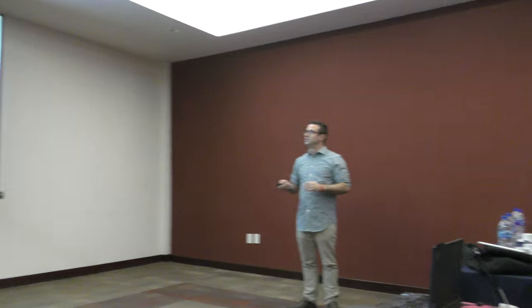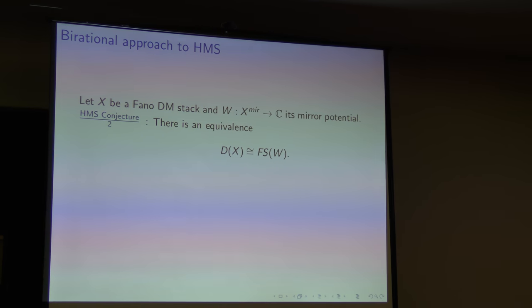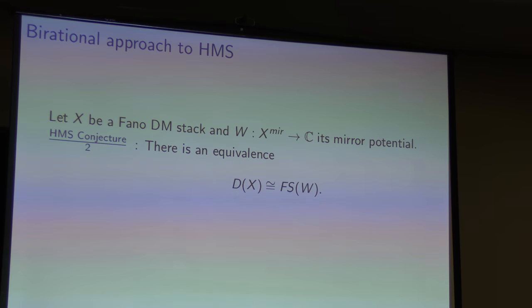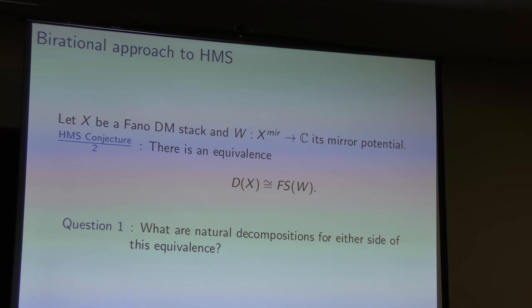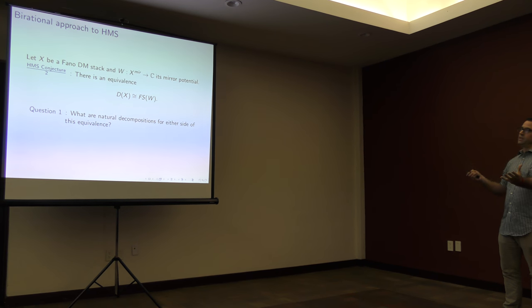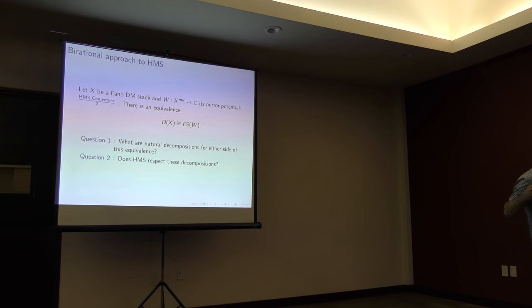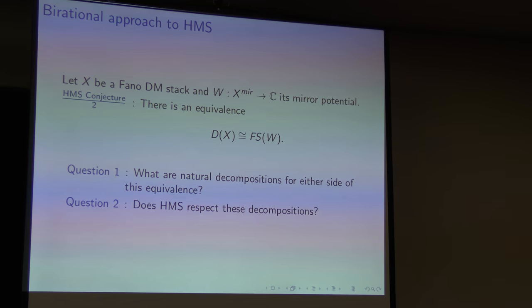Under these circumstances, with some conditions, we can define this Fukaya-Seidel category. Even though X is a stack, the mirror manifold is always a manifold in this case. Both sides of this equivalence — this conjectural equivalence — are very complicated on their face. So I'm going to ask some very naive questions about both of them. The first question is: are there natural decompositions for either side of this equivalence? And the second question is: if I had some natural decomposition of the category on the left and some natural decomposition of the category on the right, is there a way that homological mirror symmetry will send one to the other, respecting these decompositions in some nice way?